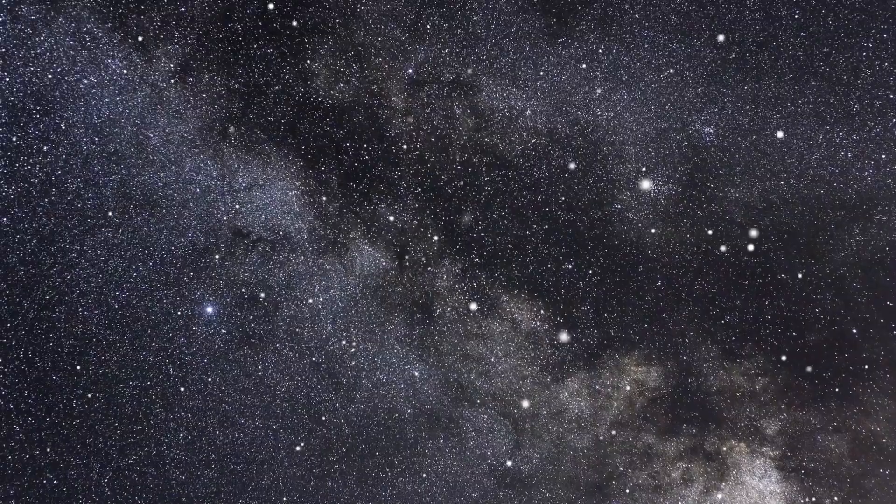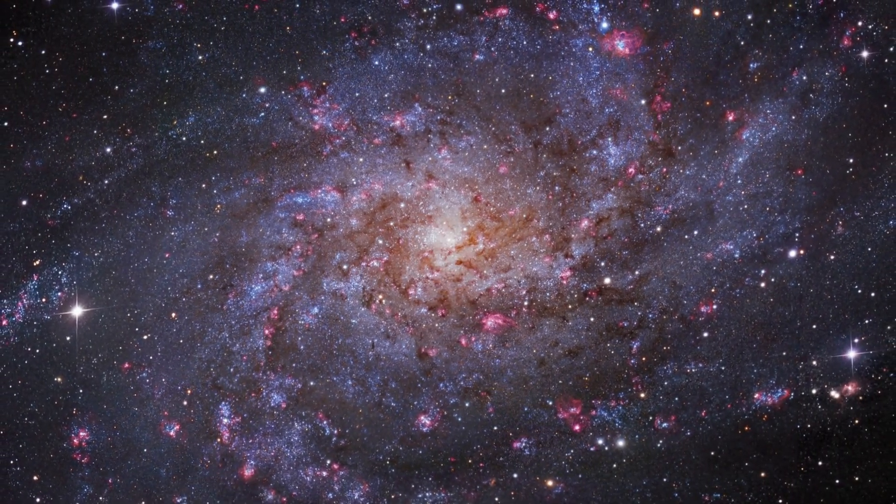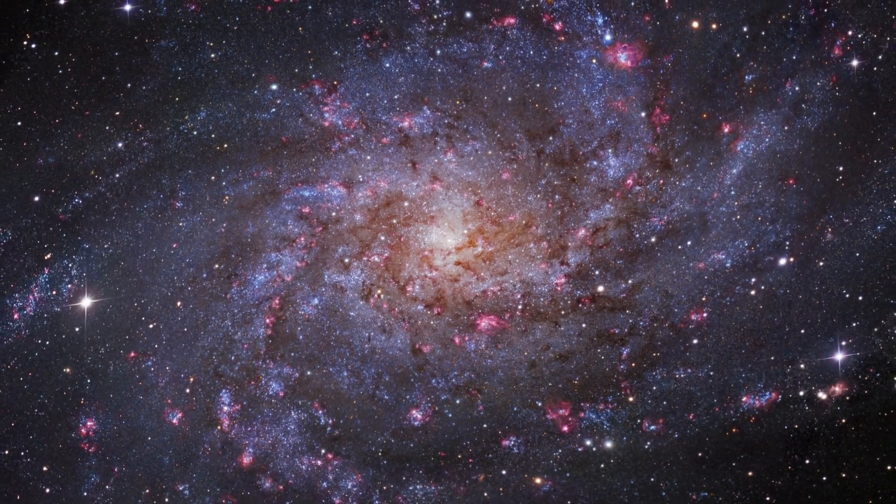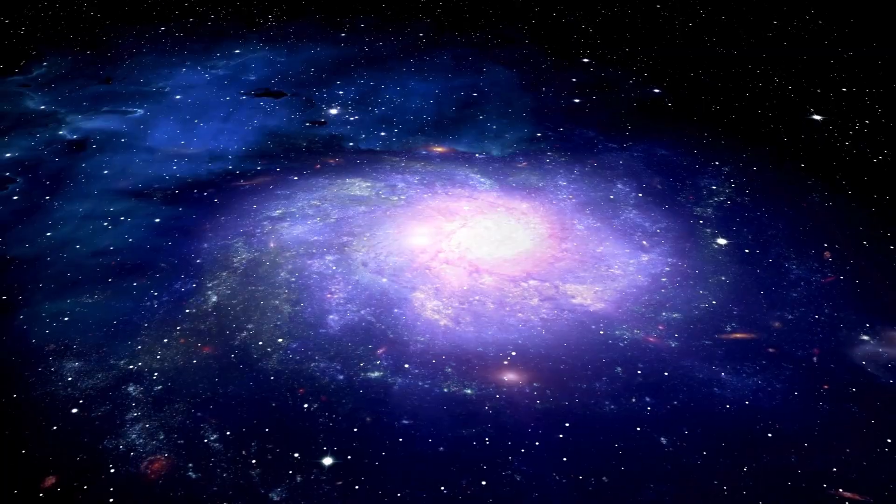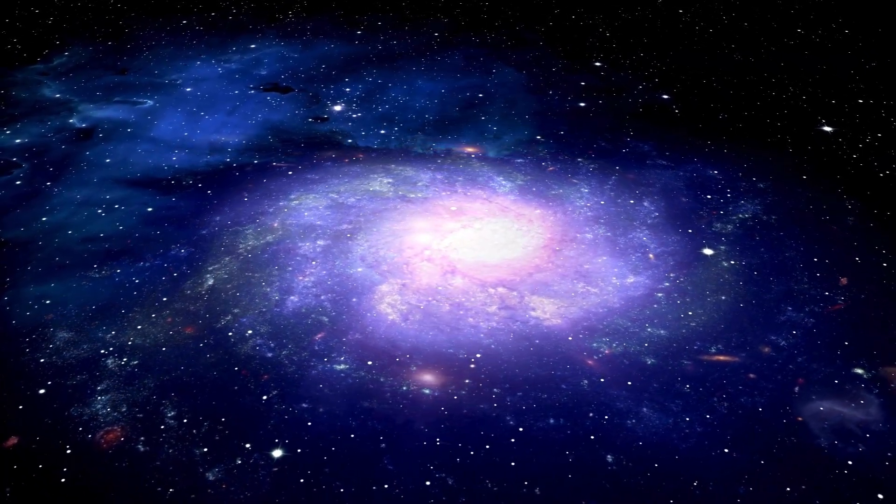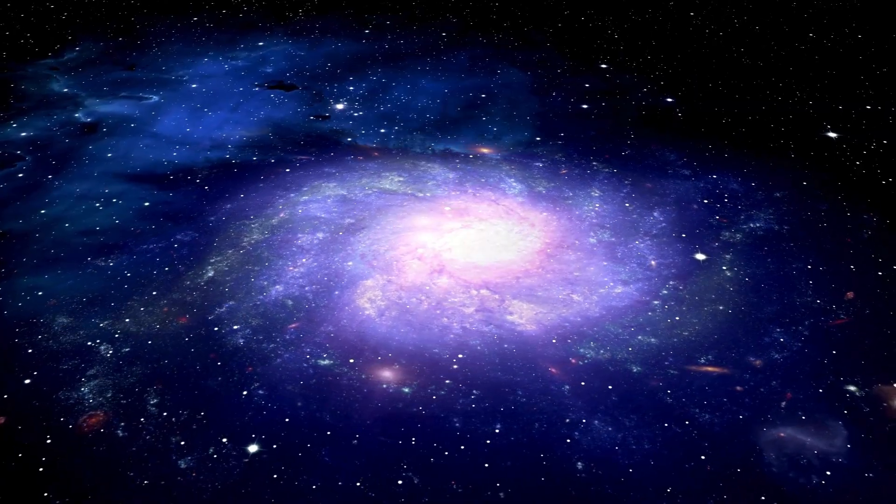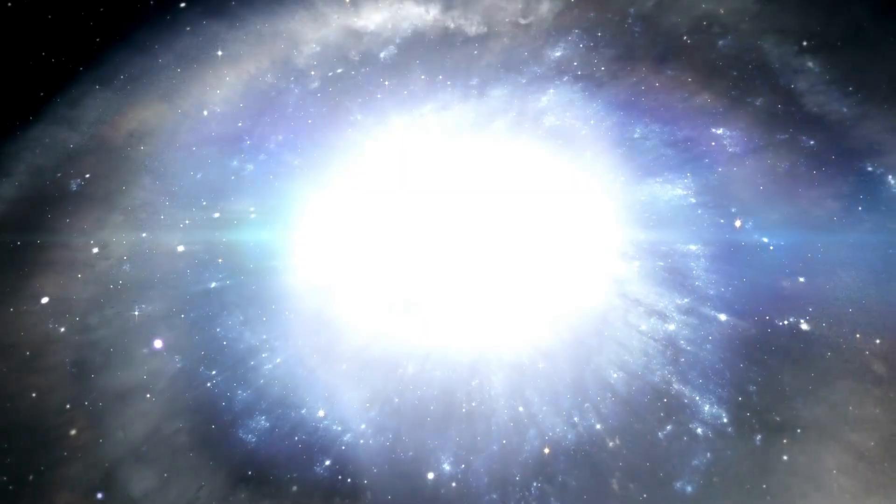Should Betelgeuse explode in our lifetime, it will be a core-collapse supernova. This type of explosion occurs when a massive star can no longer sustain its own gravity and collapses under its weight. The explosion will release an incredible amount of energy, more than the sun will emit in its entire lifetime, and will briefly outshine the moon, making it visible even during the day.